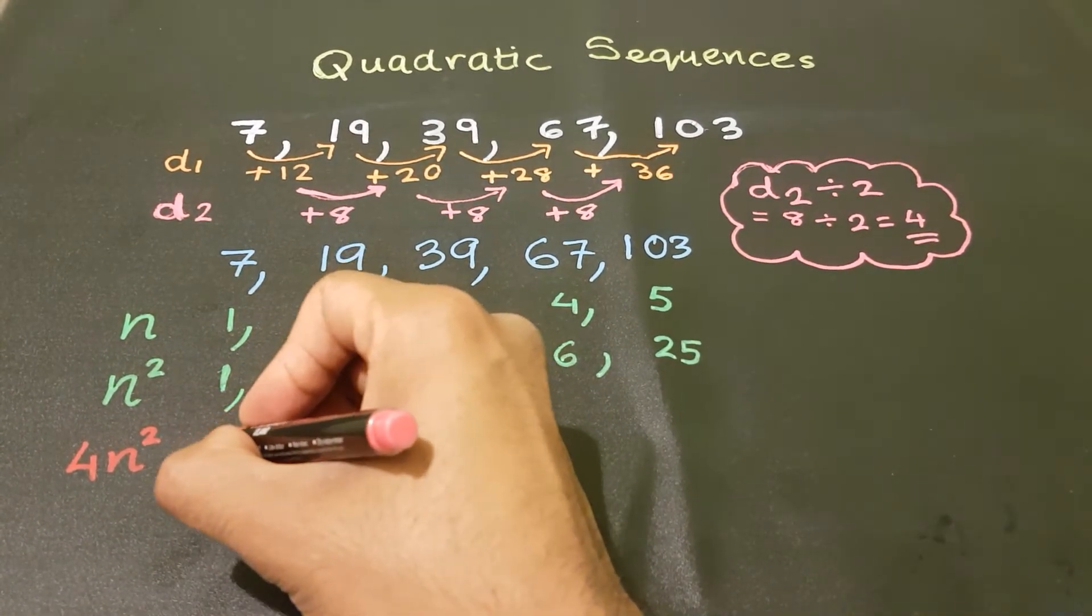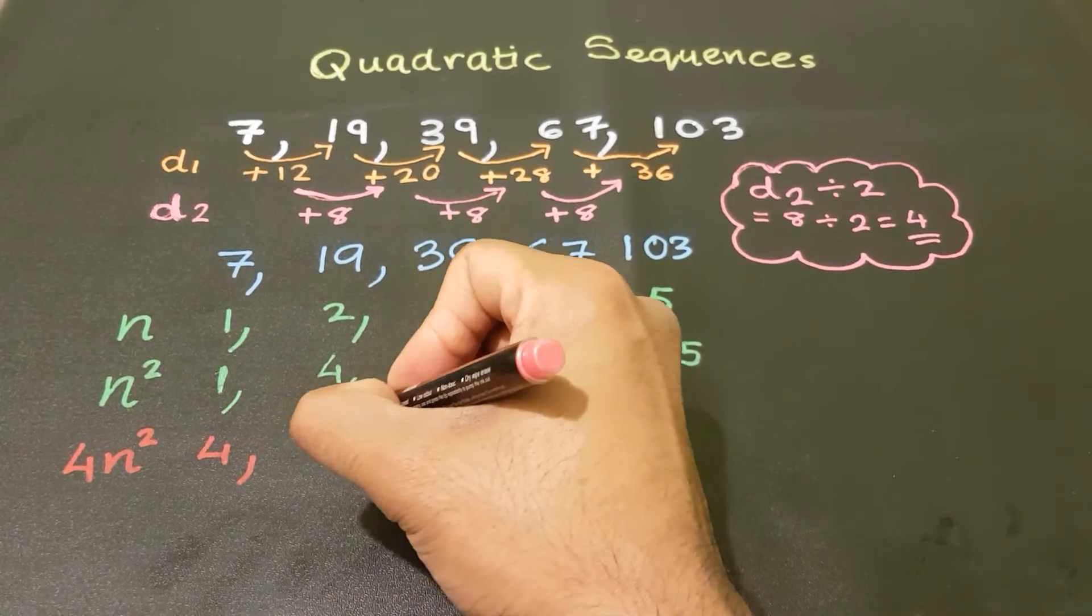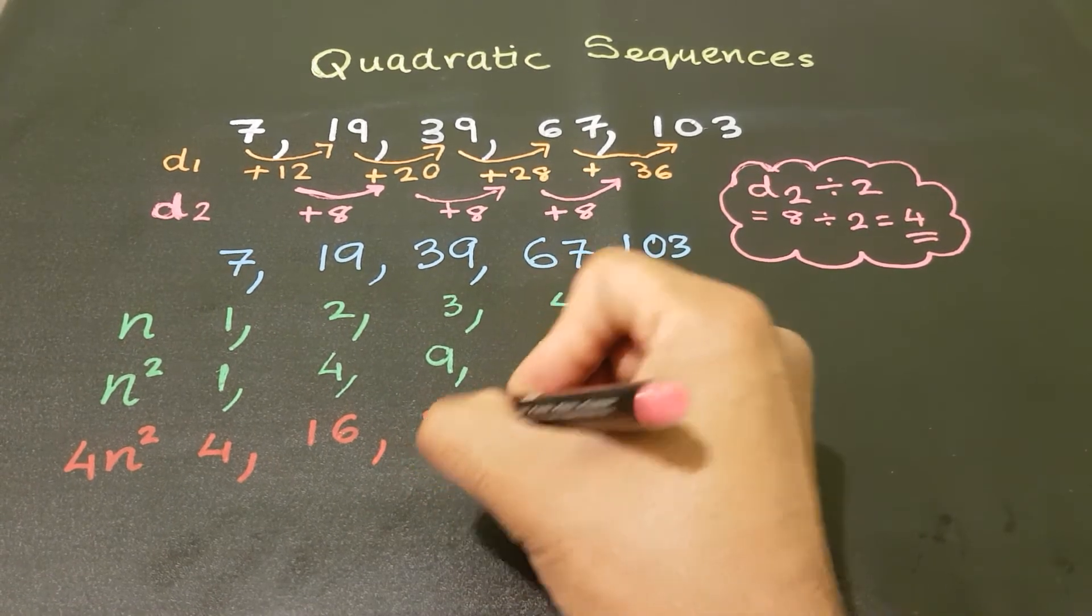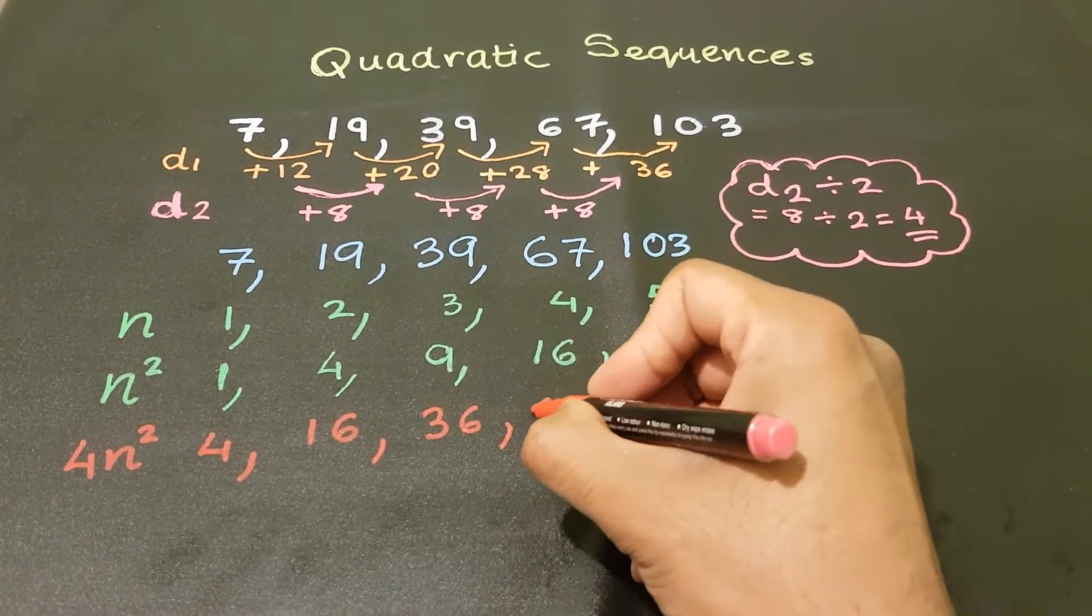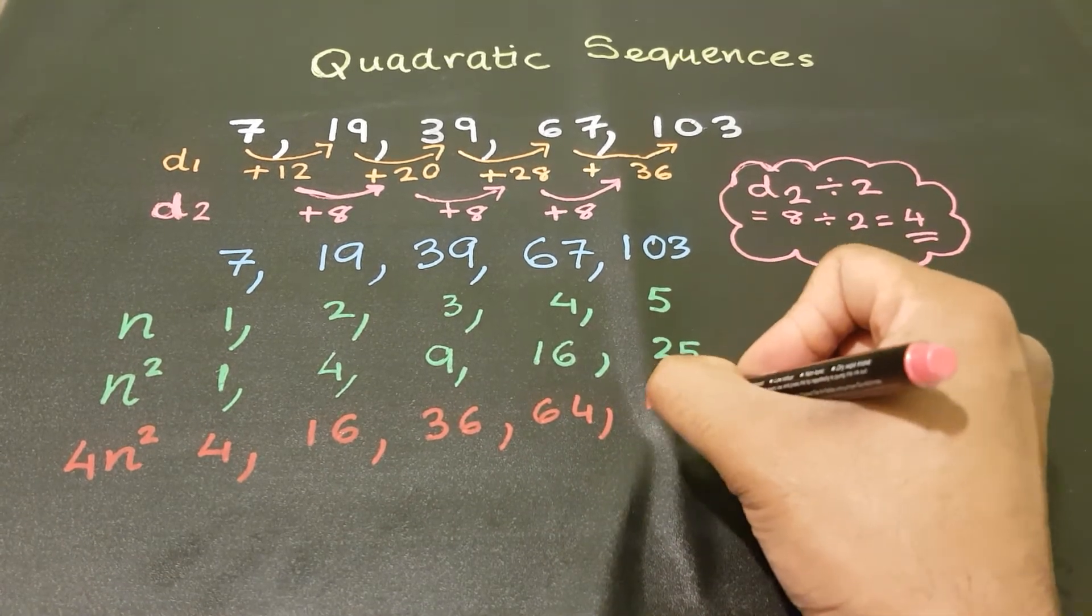So that's 4 times 1, which is 4. 4 times 4 is 16. 4 times 9 is 36. 4 times 16 is 64. And 4 times 25 is 100.